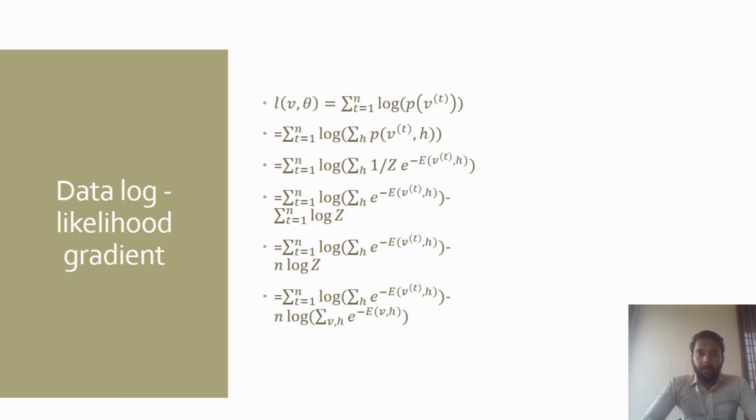Probability of v we have studied earlier: probability of v is equal to probability of v comma h summing over all possible values of h. Substituting the probability values, we will be performing these steps as shown here.